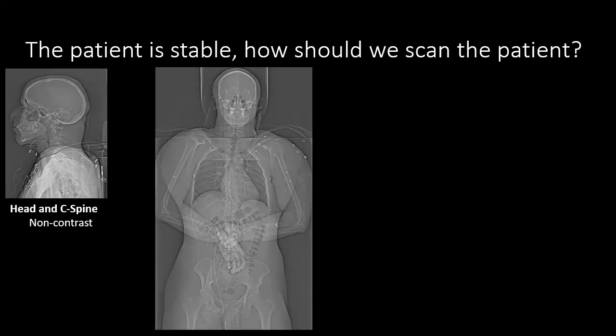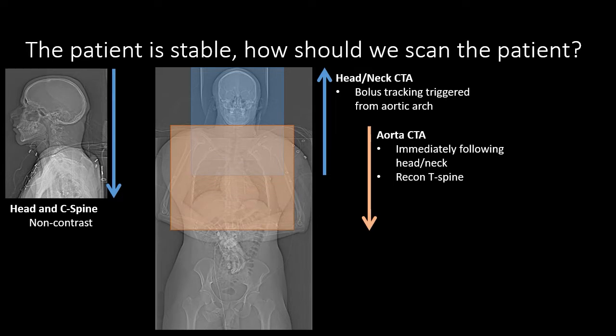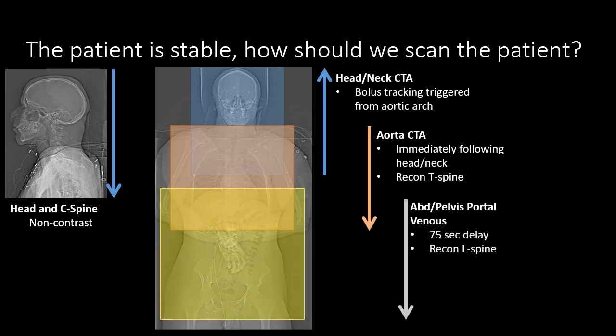Now that the patient is stable after resuscitation, how do we scan the patient? There are a few different protocols, and this is very dependent on the institution that you're practicing. Here at UK, we will use a multi-phase scan, and we'll often do what we refer to as a NAND scan, where the entire body is scanned in multiple phases. We often will start with a non-contrast scan of the head and C-spine, then a CTA of the head and neck, followed by a CTA of the chest predominantly looking for acute aortic injury, and then a portal venous scan of the abdomen and pelvis.